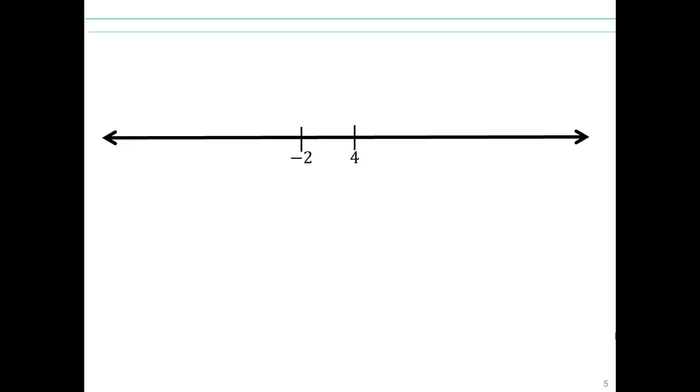You can see how multiplication acts on inequality. So we have here negative 2 is smaller than 4. You can see how negative 2 is to the left of 4. What do you think happens if you multiply both sides by, say, 3?